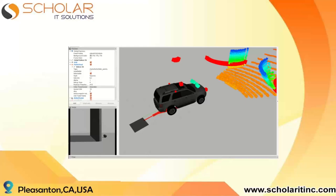Since ROS is open source, if you're into hobbyist robotics you can just buy a kit from Amazon, download ROS, and start making simple robots by following instructables or YouTube videos. There is a huge amount of scope in getting started on robotics this way.